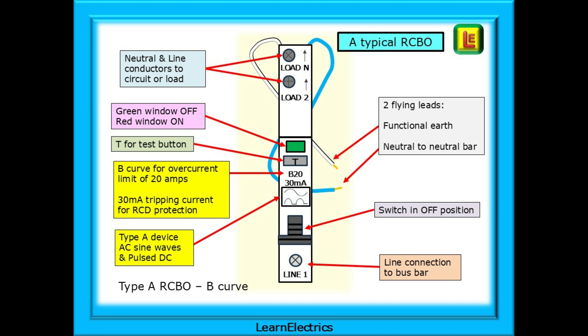A Type A device will respond to AC sine waves and pulsed DC as found in many modern appliances: TVs, washing machines, microwaves, etc.